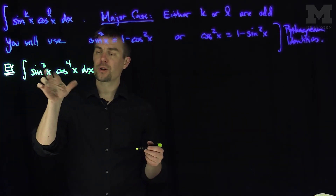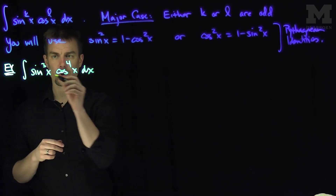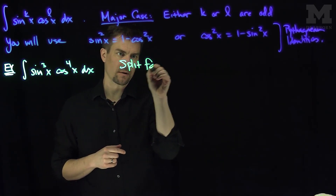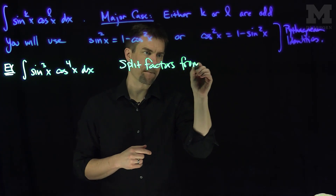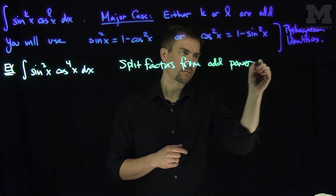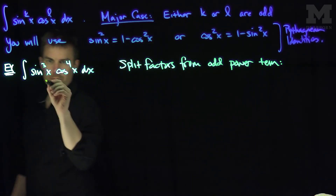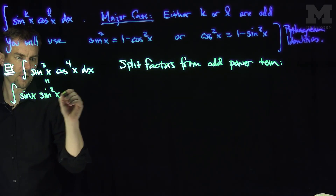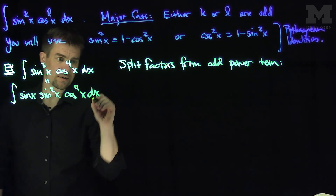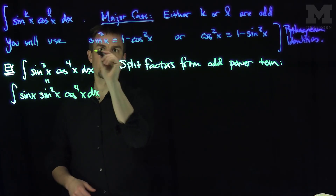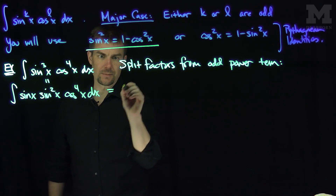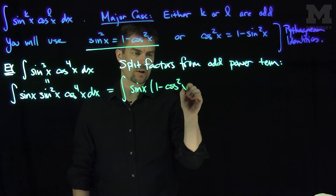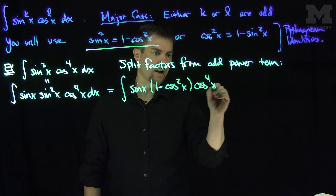What we're going to do is split off some of the factors of sine — we split factors from the odd power term. So this integral is exactly equal to the integral of sine of x times sine squared of x times cosine to the fourth of x dx. Now using the Pythagorean identity, this becomes the integral of sine of x times (1 minus cosine squared of x) times cosine to the fourth of x dx.